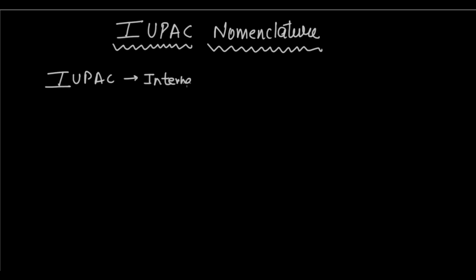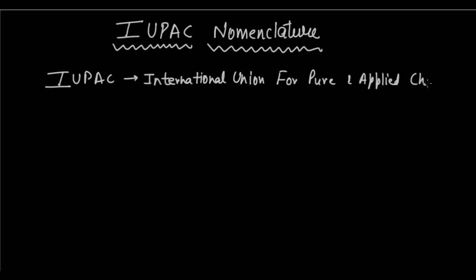It stands for the International Union for Pure and Applied Chemistry. Now, the IUPAC has created a system of naming of organic compounds, which is what we call IUPAC nomenclature of organic compounds. So now let's learn how we can name compounds on the basis of IUPAC nomenclature.